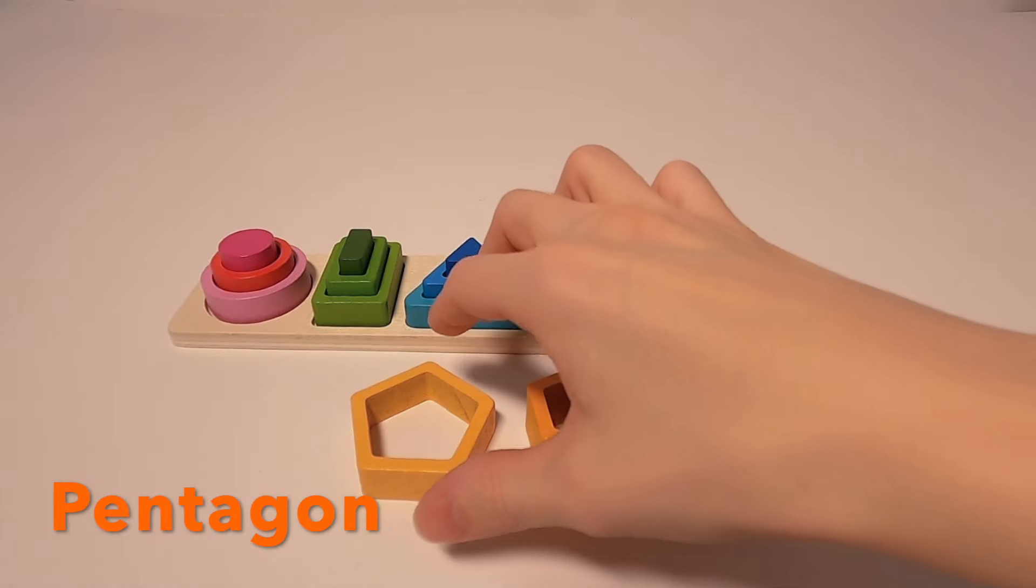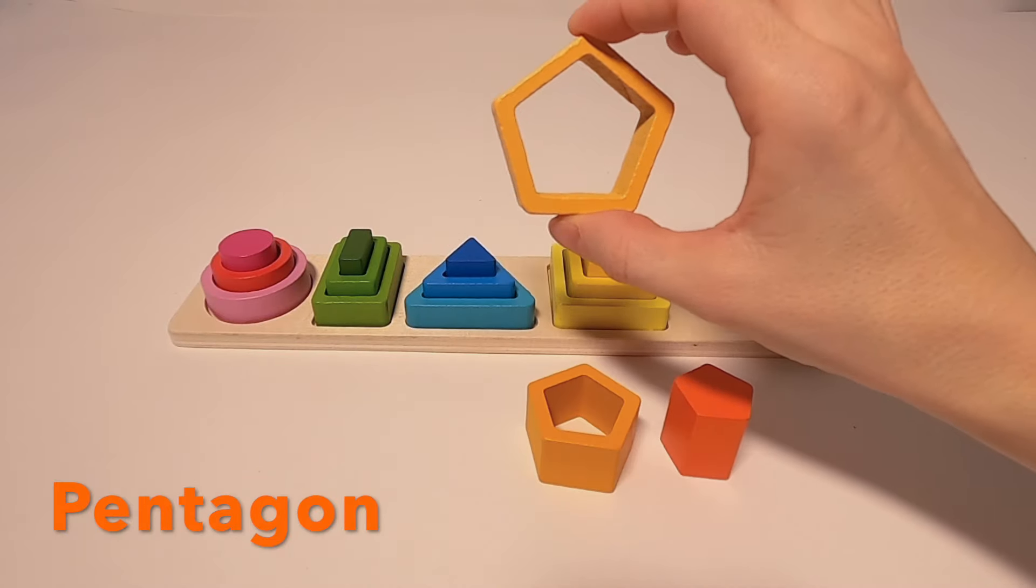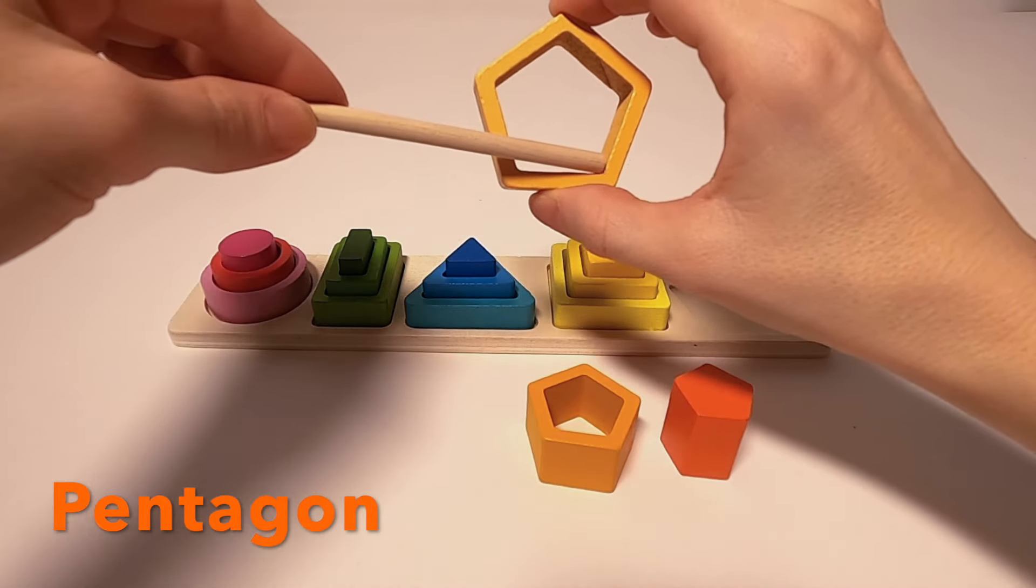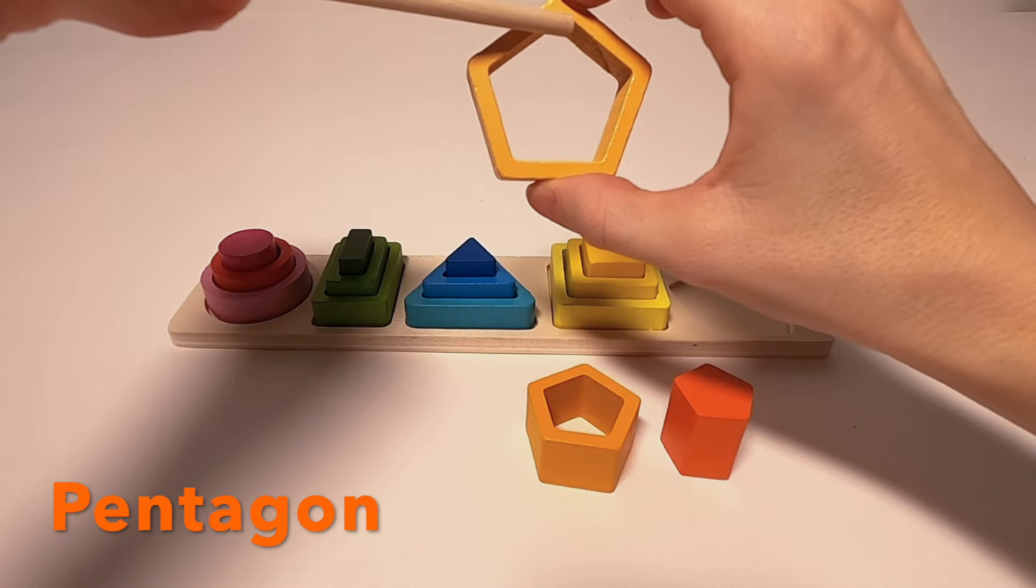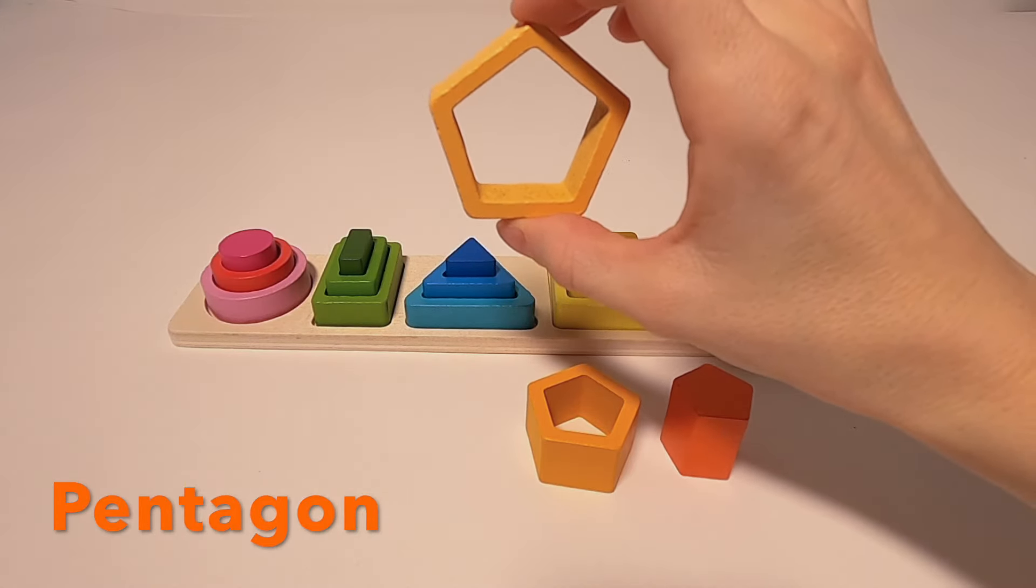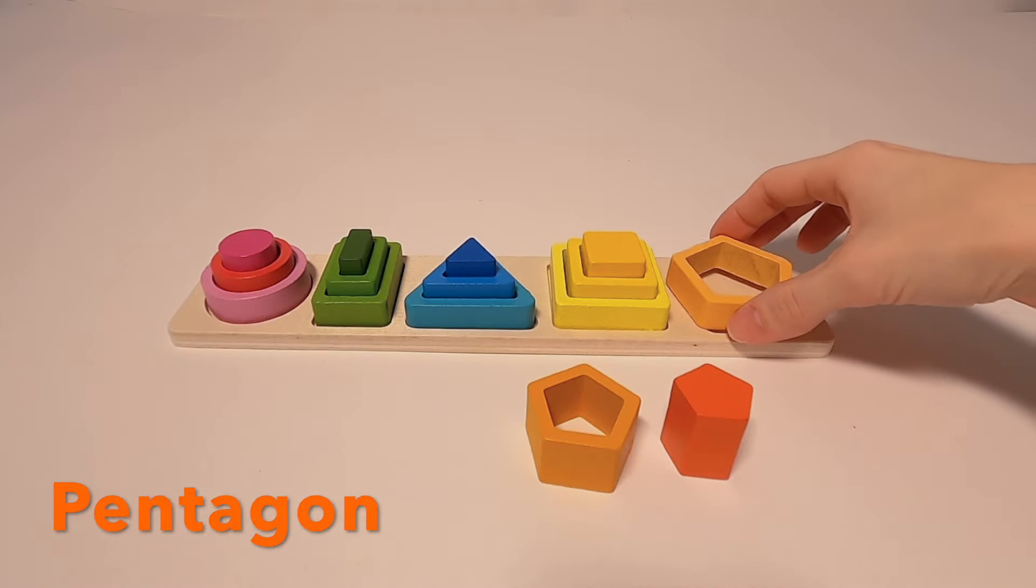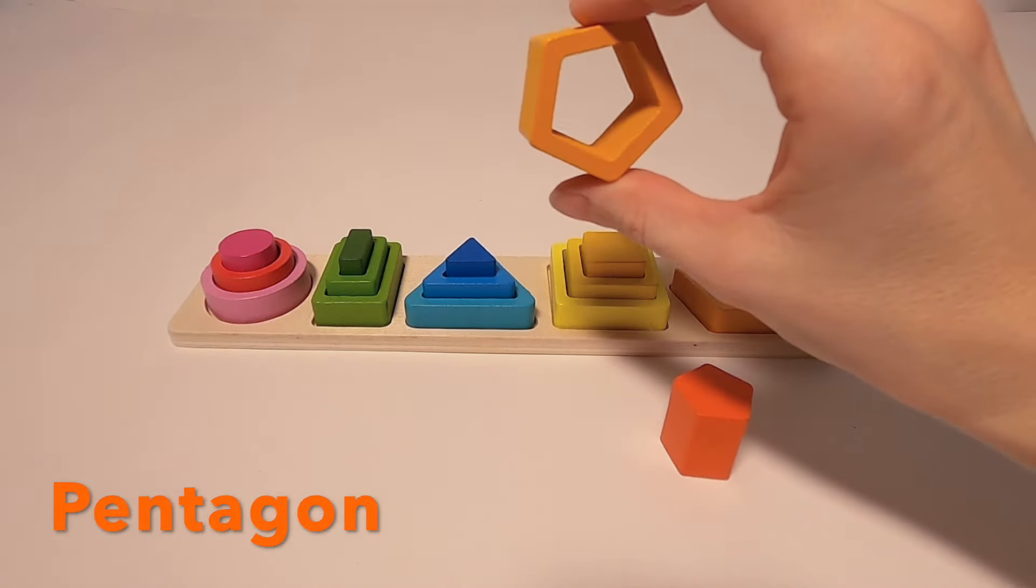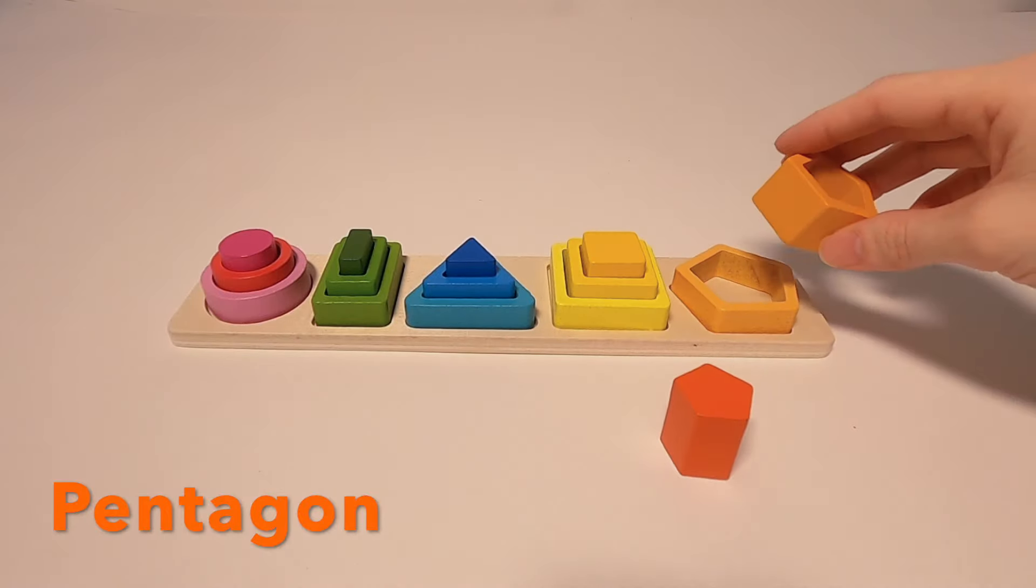The next one is called a pentagon. Look how it looks—it almost looks like a house with a roof on top. Also here with the pentagon we have the big one, the medium that you can put in the big, and finally the small one.